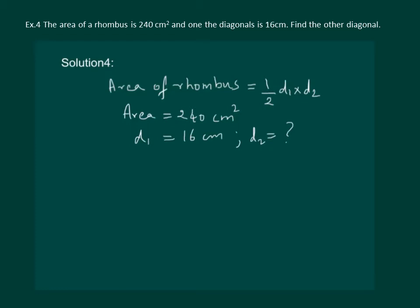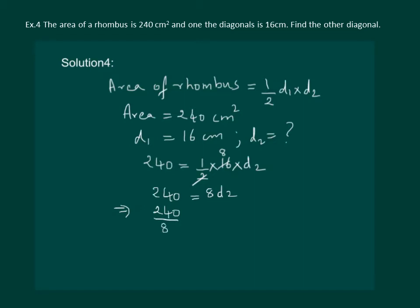Let us substitute the values in the formula. We have 240 = ½ × 16 × d2. This gives us 240 = 8 d2, which implies d2 = 240 ÷ 8 = 30. Hence the length of the other diagonal of the rhombus is 30 cm.